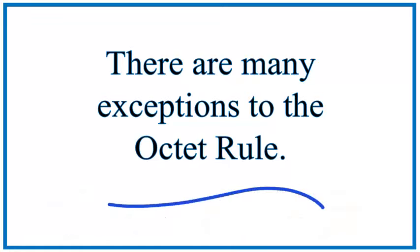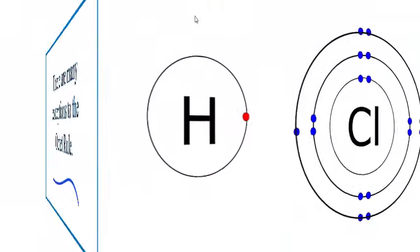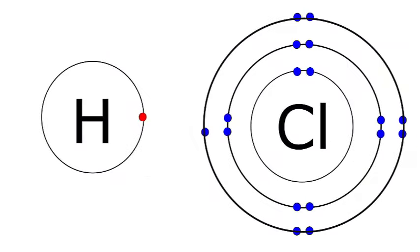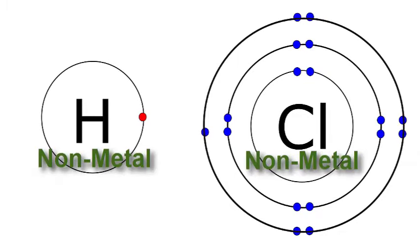So how does the octet rule work? Let's look at hydrogen and chlorine and see how they bond to form HCl, hydrochloric acid. Since both are nonmetals, they share electrons and form a covalent bond.